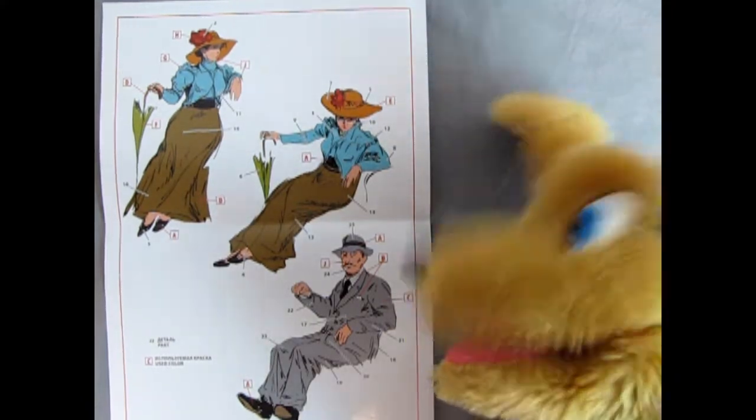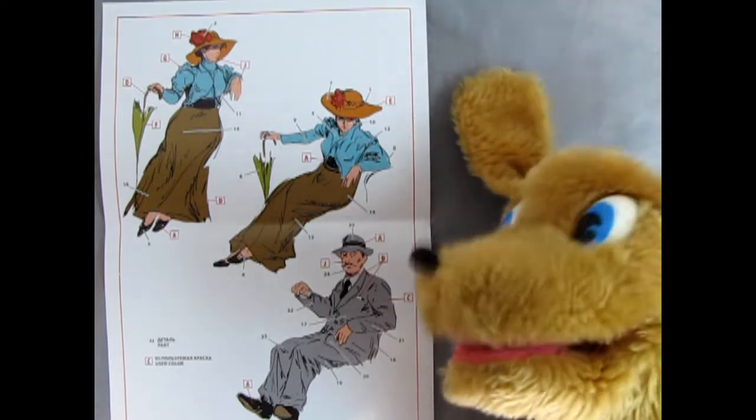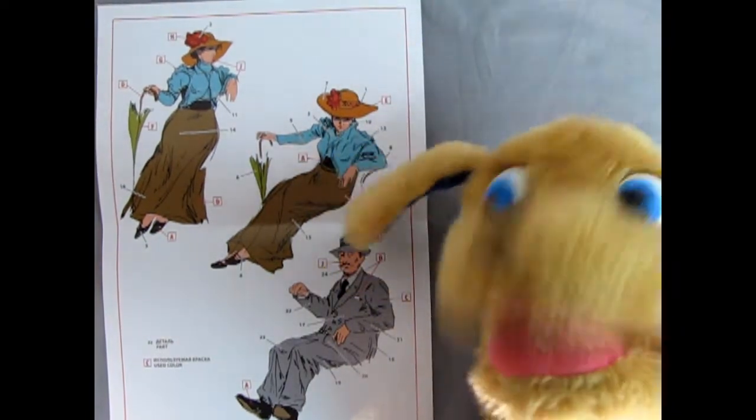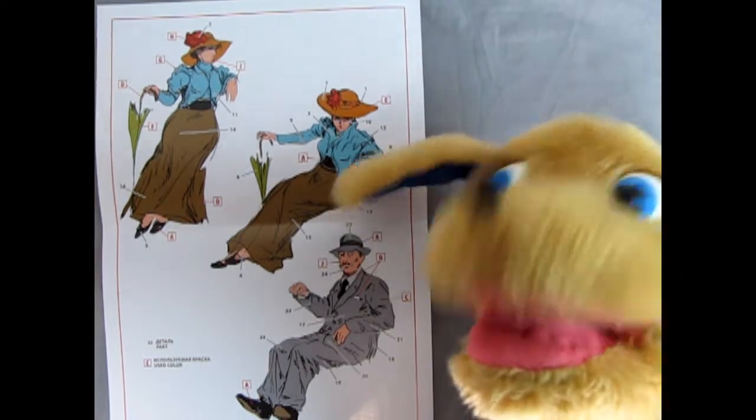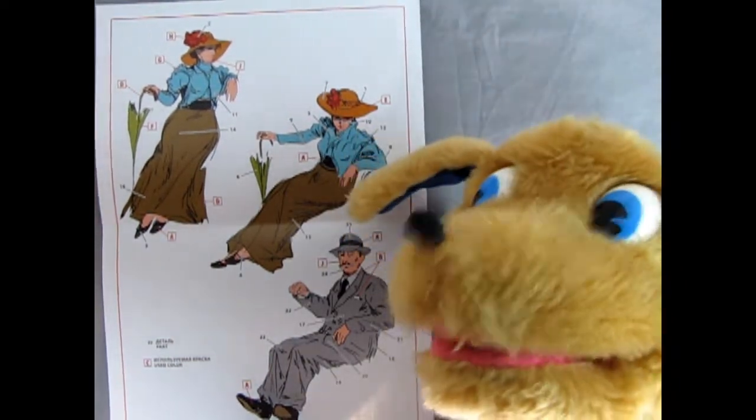And down here we have Papa who will be holding the steering wheel and looking out the side of the car as well. So again you can see just how cool these would look all painted up in the style that we got here. And now let's take it over to Trevor.